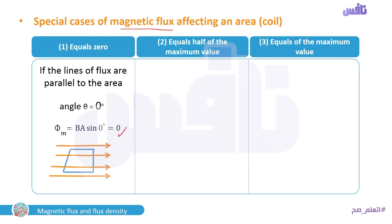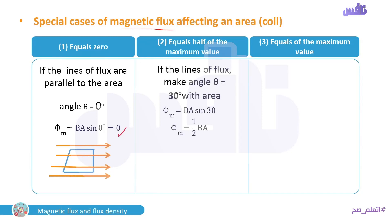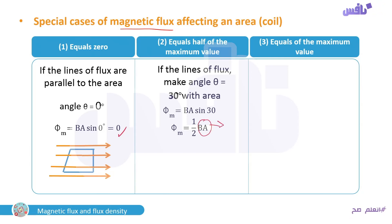Case two: Φ equals half the maximum value. Since sin θ = 0.5, the angle θ = 30°. So if the flux lines make an angle of 30°, then sin 30 = 0.5, giving Φ = 0.5 × BA.